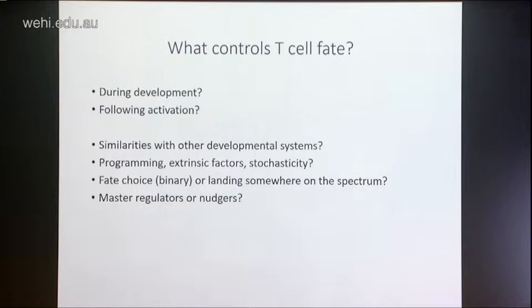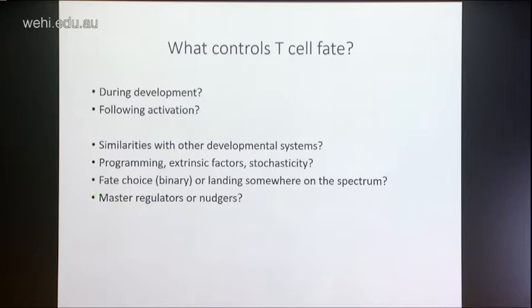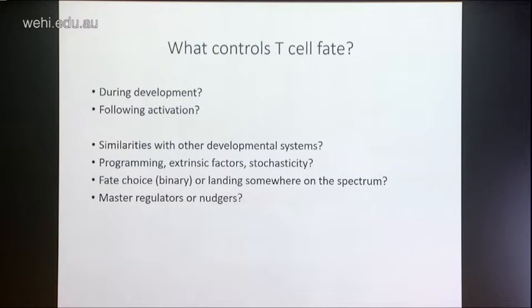A lot of the time we tend to think about binary fate choices, and I think we're learning more and more that there's actually a spectrum of fate choices, and we should be thinking more about where the cell lands along that spectrum rather than making this choice between X or Y. There's also a temptation to think about master regulators and to decree that one particular influence is the determining factor in a differentiation choice. Most likely there's actually a combination of many factors, all nudging the cells in different directions, and quite possibly it's your experimental setup that's disguising some of the other nudges to make it look like you're just seeing one master regulator.